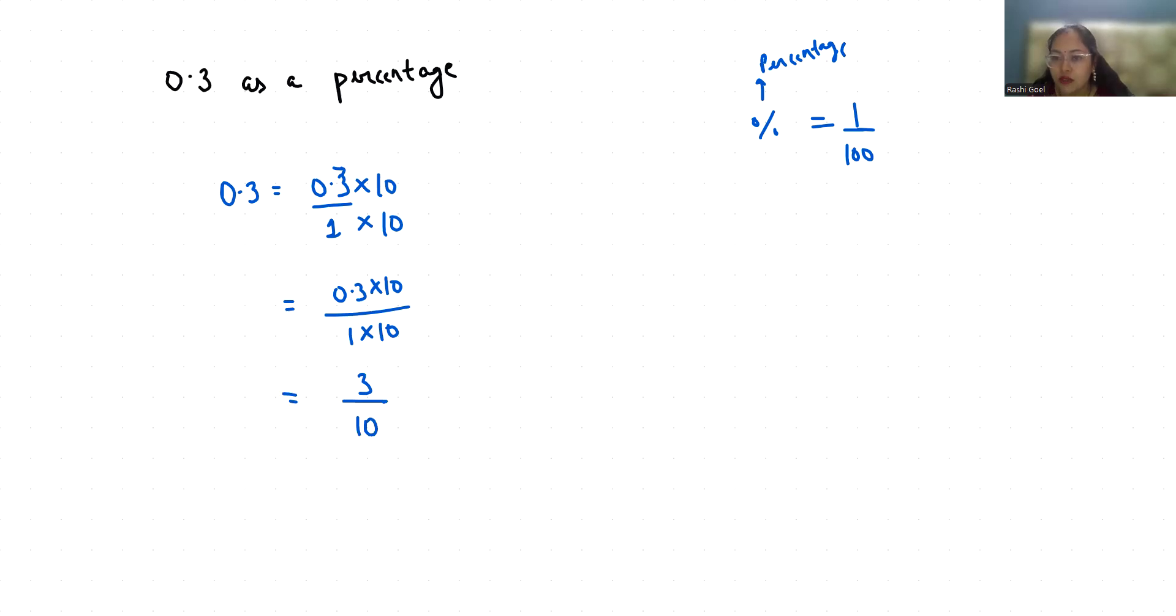To convert into percentage we need 100 in denominator. We can get 100 by multiplying by 10. We know that if we make any change in denominator we have to make the similar change in numerator, so it becomes 30 by 100.